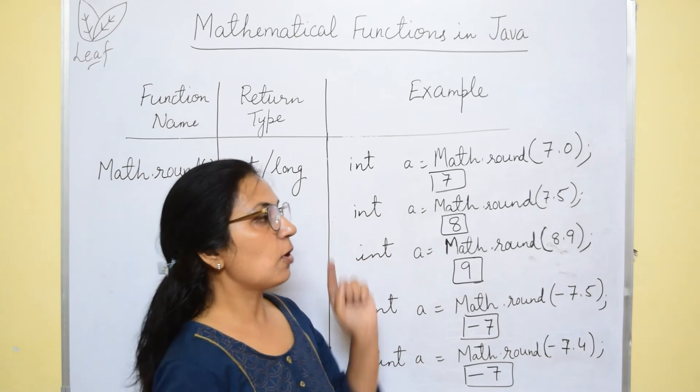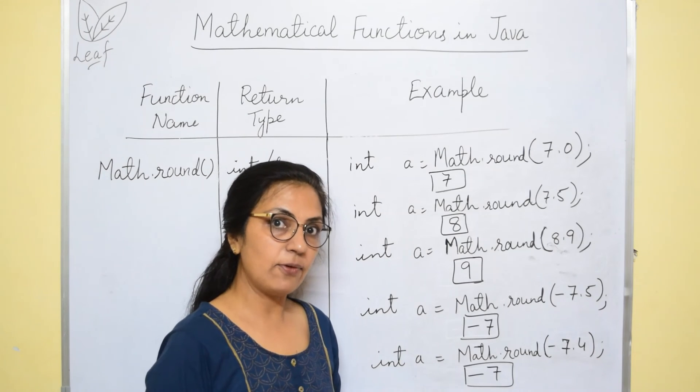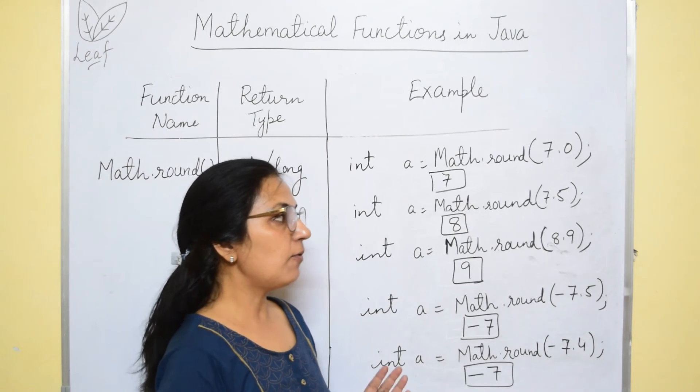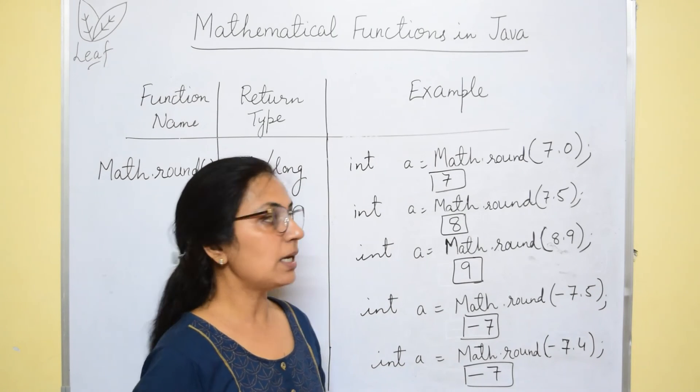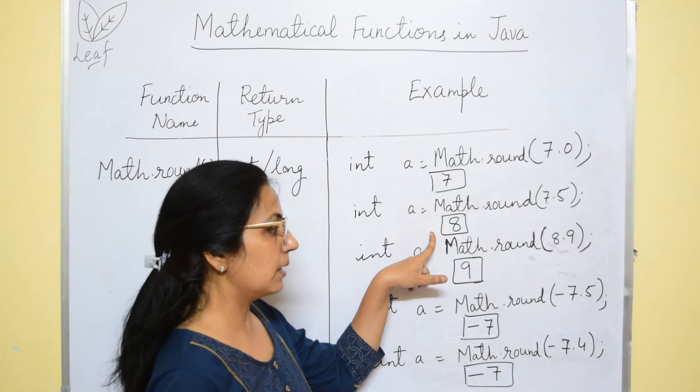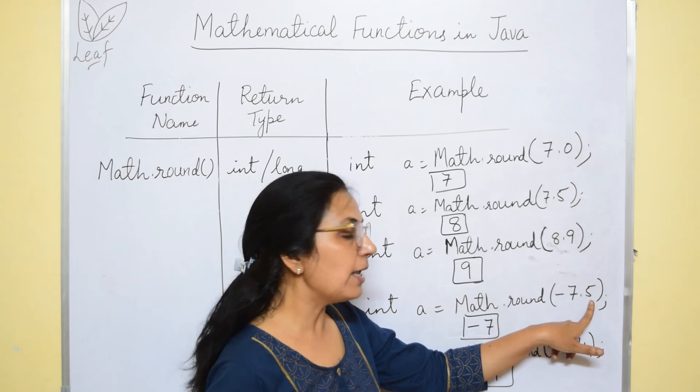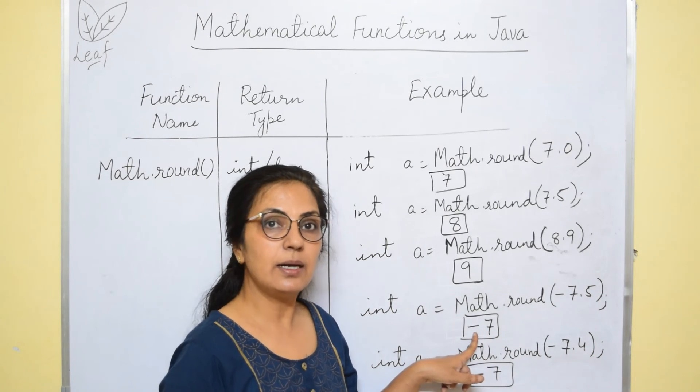If it is from 0.0 to less than 0.5, it returns the same integer value. And if it is 0.5 or more, then next integer value is returned. But in case of negative number, if it is 0.5 also, then same integral value is returned.